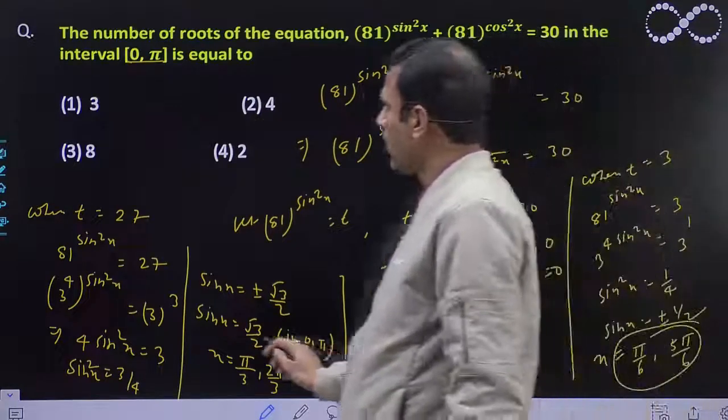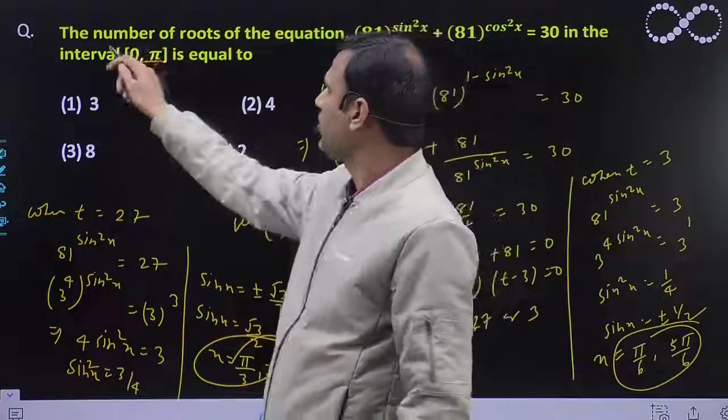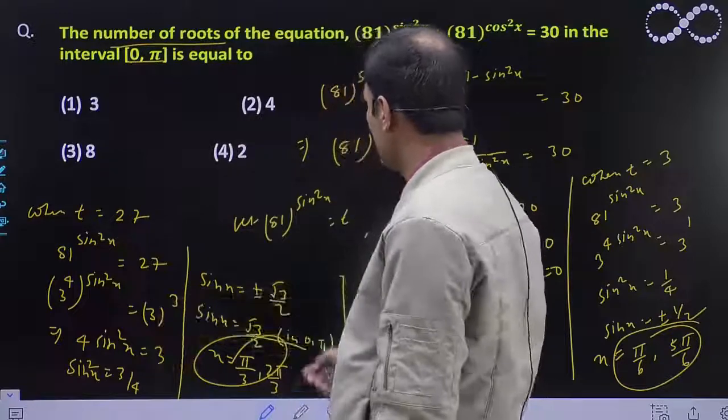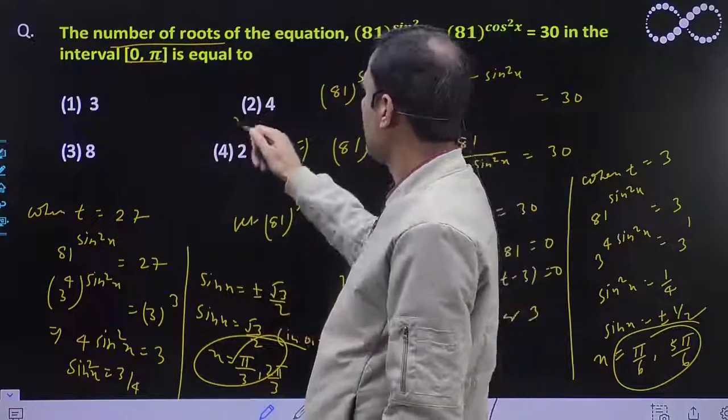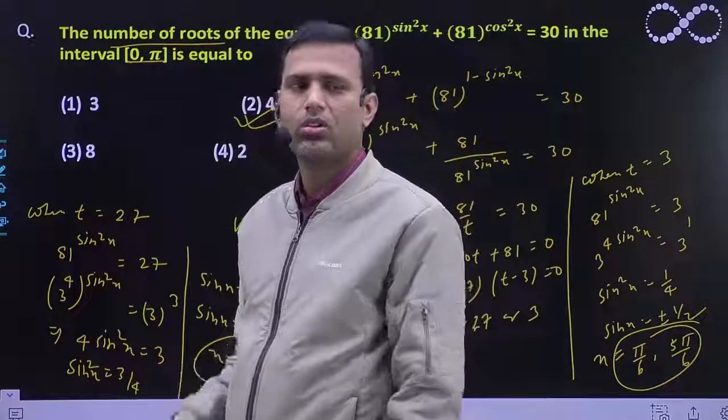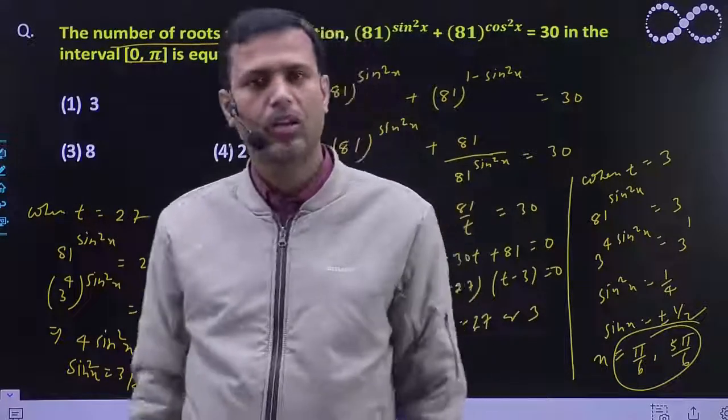तो total number of values कितना हो गया? 4 solution हो गया, so second option is the correct option. Okay, thank you.